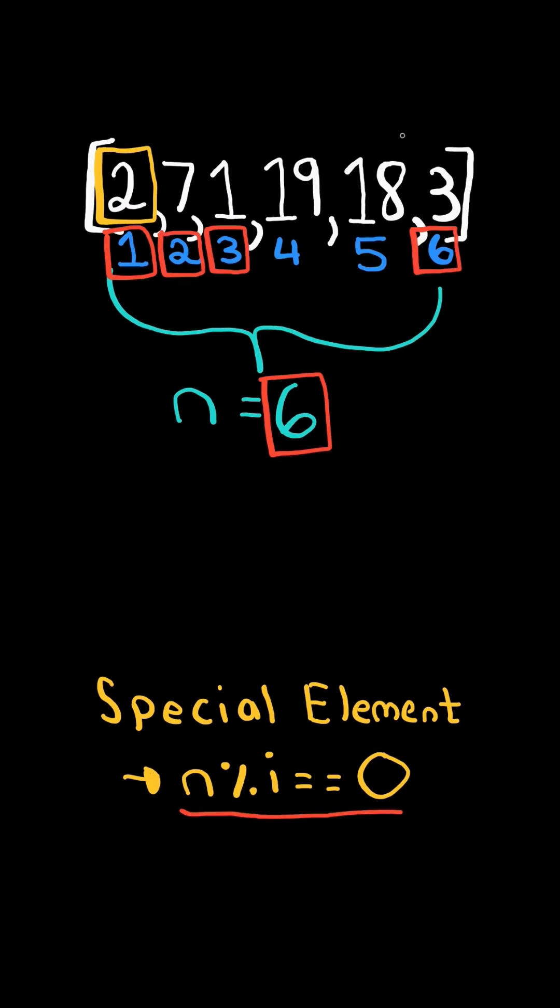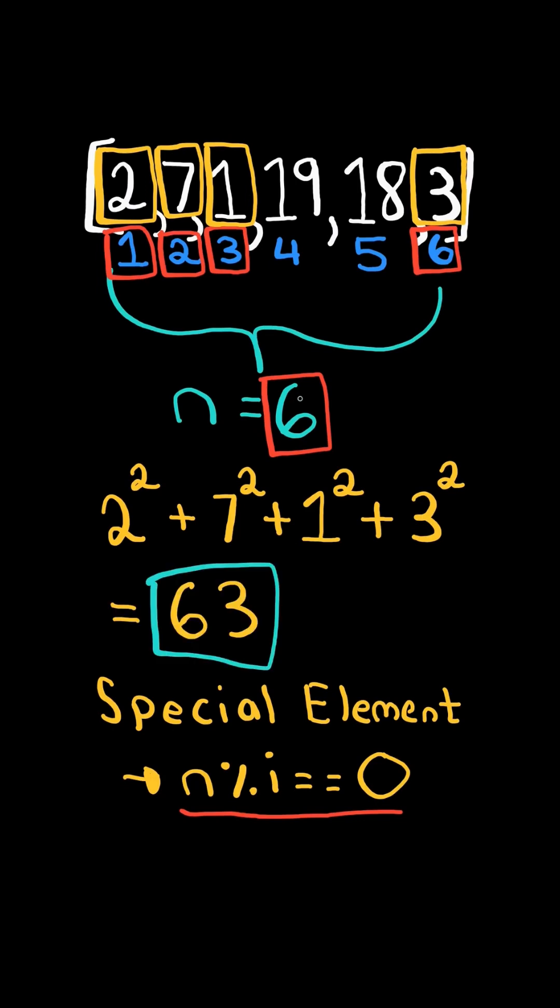Indices 1, 2, 3, and 6 divide n, so the numbers 2, 7, 1, and 3 are special. Take the special numbers, square them, sum them together, and return the result.